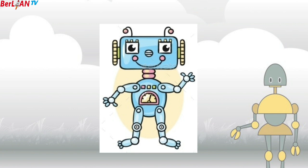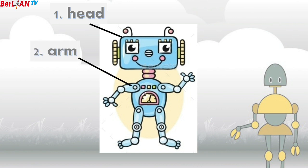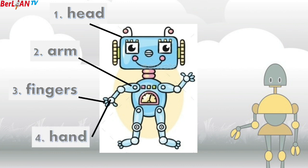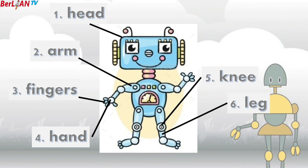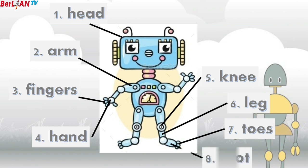Here is the picture of the robot. Do you like robots? Of course you like it. Now I will explain the names of the parts of the robot: Head, Arm, Fingers, Hand, Knee, Leg, Toes, Foot.